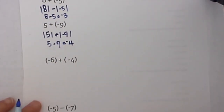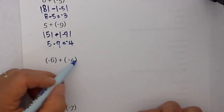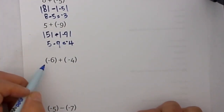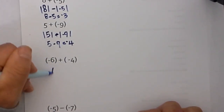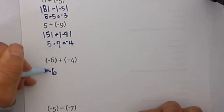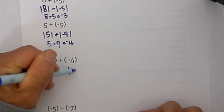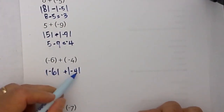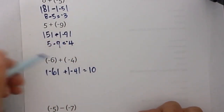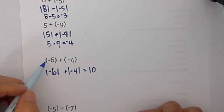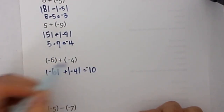Now let's get to the next one. Is the problem addition? Yes. Are the signs the same? Yes. So we will add the absolute value of both numbers. The absolute value of negative 4 and the absolute value of negative 6 is equal to 10. Then you take the sign of the two numbers, which is negative.